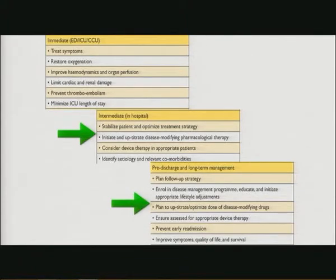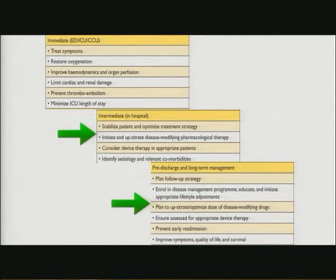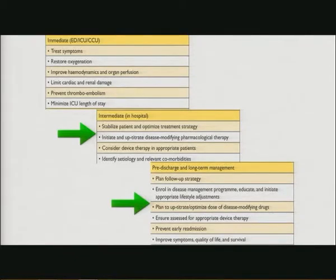An important point regarding prevention of thromboembolism: when reading the guidelines, it's usually focused on atrial fibrillation, but there is venous thromboembolism prophylaxis as well. These patients are at high risk for VTE, and even if they're in sinus rhythm, you should go for prophylaxis because they can develop a pulmonary embolism and then get worse. We treat the immediate life-threatening situation, stabilize and give better medicines, then use disease-modifying treatments and go for long-term follow-up.